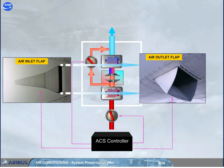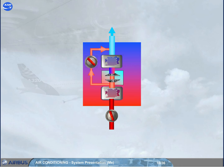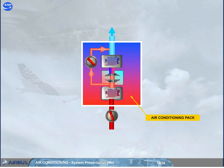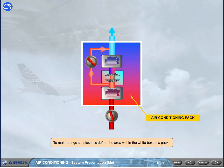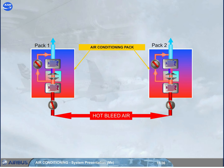The related ram air inlet flap closes during take-off and landing to avoid ingestion of foreign matter. To make things simpler, let's define the area within the white box as a pack. The two air conditioning packs operate automatically and independently to provide cool conditioned air.